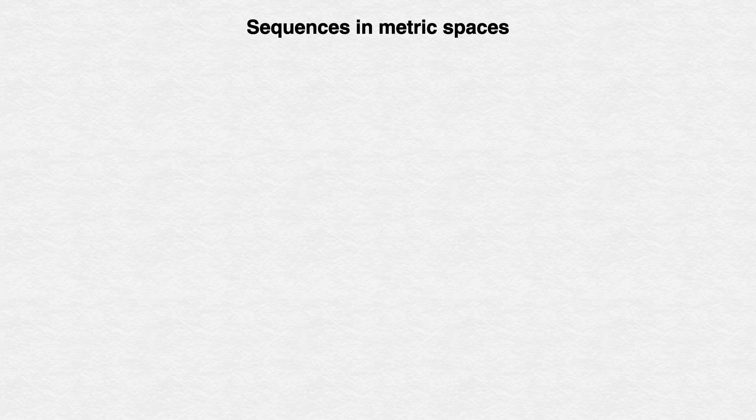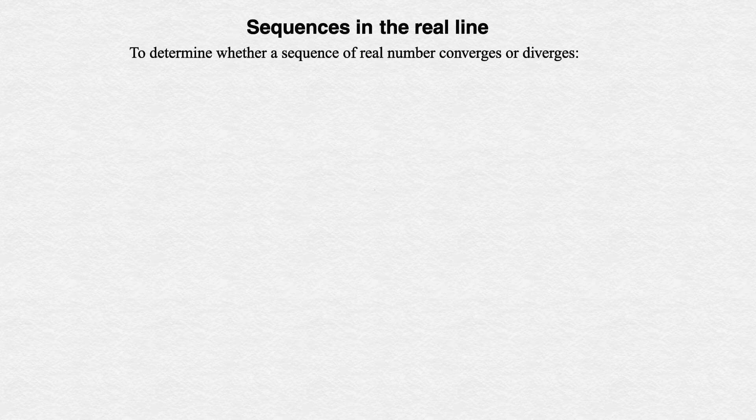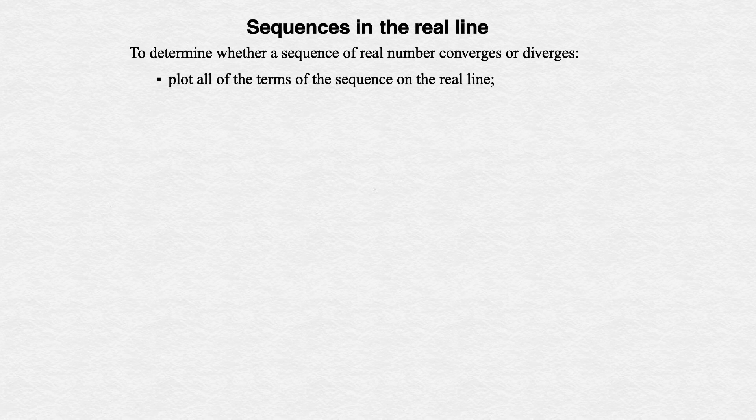In this video, we'll discuss sequences in metric spaces. As an introduction, let's quickly recap a few basics regarding sequences of real numbers, which we talked about at length in Chapter 1. To determine whether a sequence of real numbers converges or diverges, we plot all of the terms of the sequence on the real line, remove more and more of its initial terms, and observe.